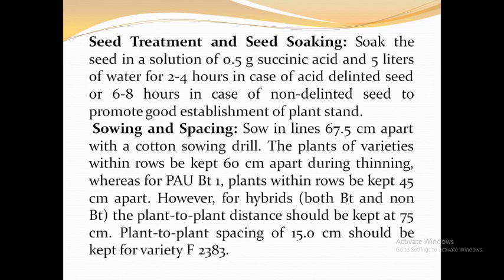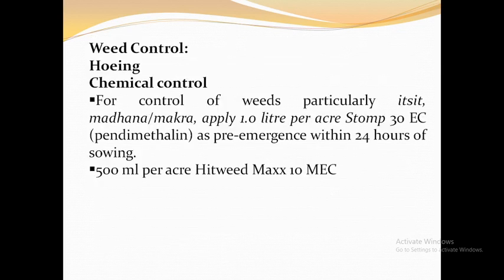To develop resistance management for Bt cotton, 20% of the area should be sown under non-Bt cotton hybrids around Bt cotton fields. For sowing spacing, sow in lines 67.5 cm apart. Plants within rows are kept 60 cm apart during thinning, whereas PAU Bt1 plants within rows are kept 45 cm apart. For hybrids, both Bt and non-Bt, plant distance should be 75 cm. Plant spacing of 15 cm should be kept for variety F2383.